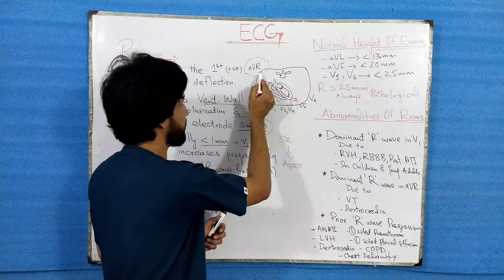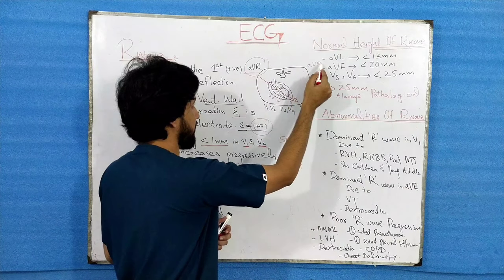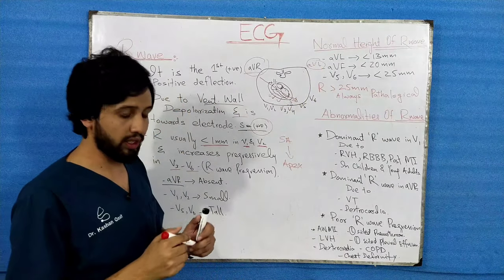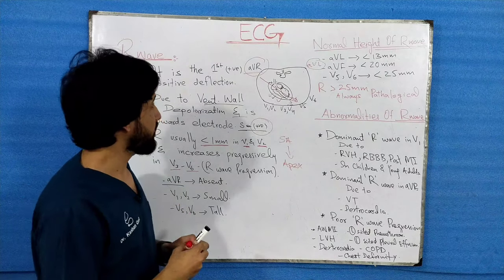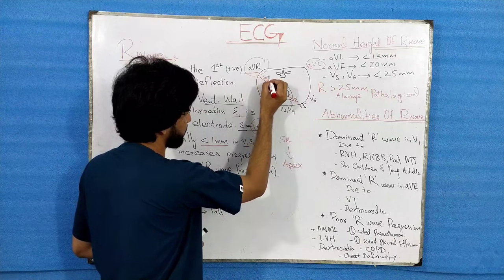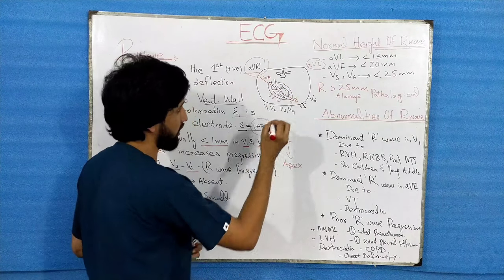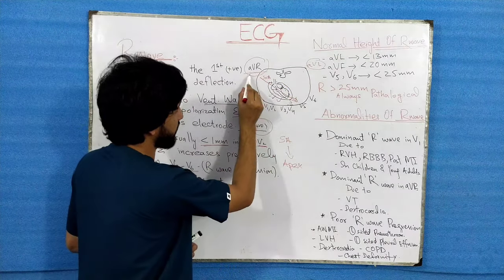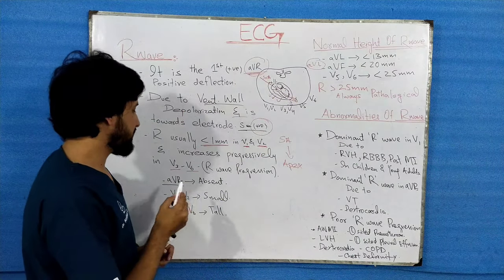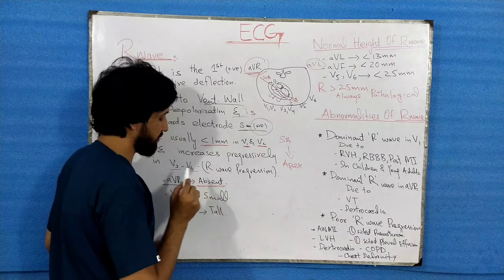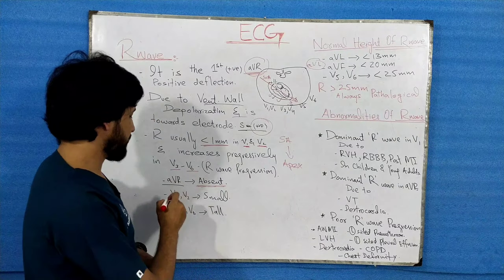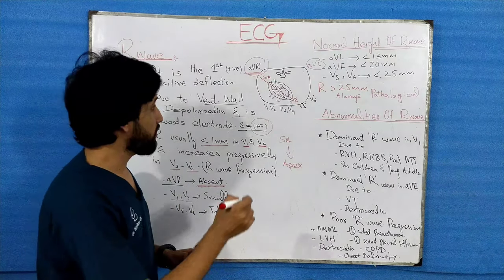The impulse moves away from AVR — the lead connected here — while AVL and other leads record deflections of the heart. As this impulse moves from the SA node toward the apex, it moves away from AVR. So in AVR you will see no R wave, or an absent R wave, while in V1 and V2 you will see only a small deflection.